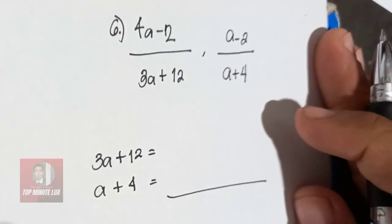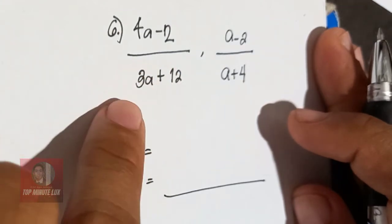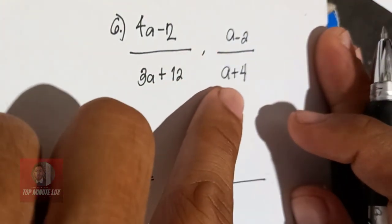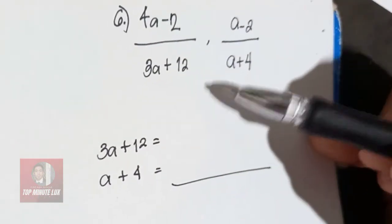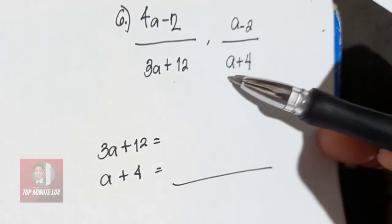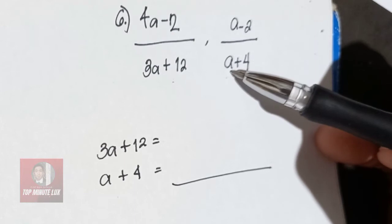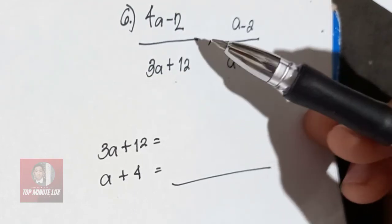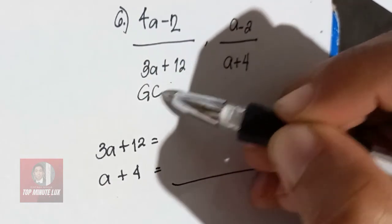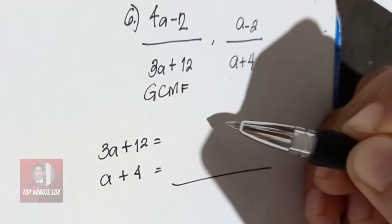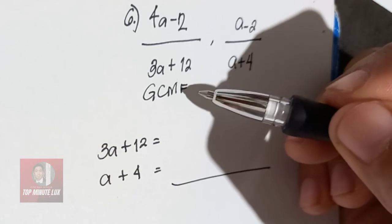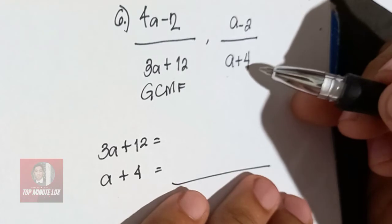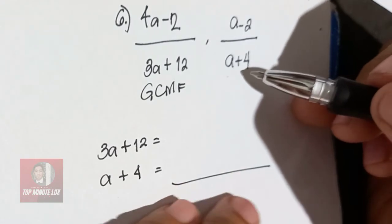So last example, 4A minus 2 over 3A plus 12, and A minus 2 over A plus 4. So in this example, you cannot immediately combine these two denominators. Why? Because your 3A plus 12 can still be factored. How? Using the process of greatest common monomial factoring. If you want to review on how the process is being made, you can check it on the channel. And your A plus 4 cannot anymore be factored, so just copy it.